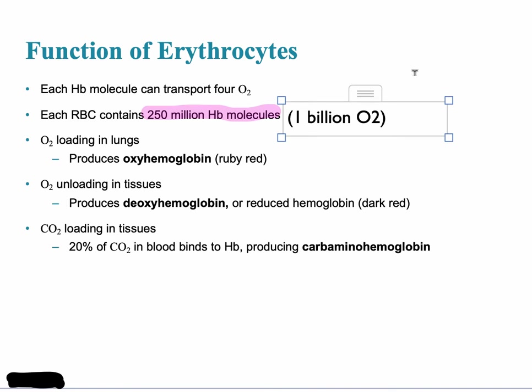When somebody has anemia, that's a decrease in hematocrit, which is going to significantly reduce the amount of oxygen they can transport. The opposite end of the spectrum is polycythemia — too many red blood cells — which can be a deadly condition.